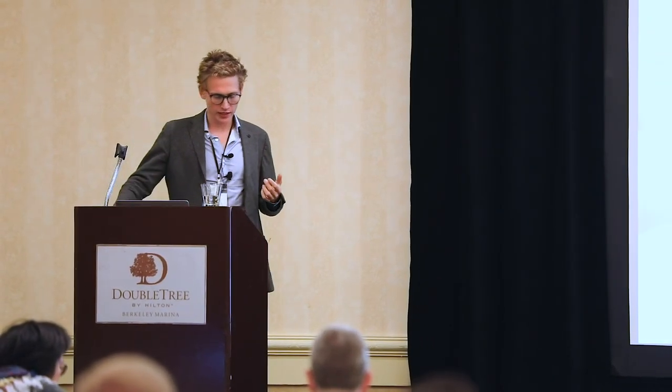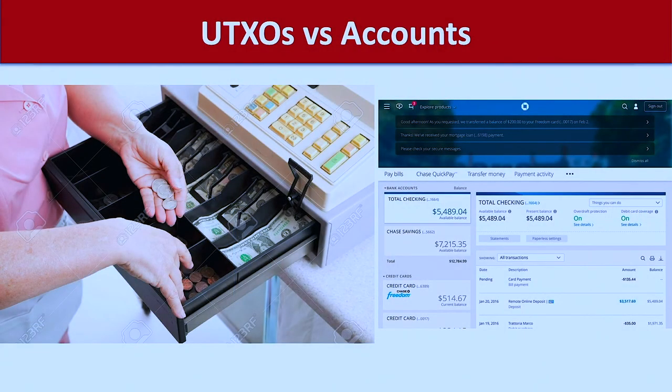A nice way to think about it is that Bitcoin is much more like cash, where I cannot spend half a $10 bill — I can only spend the full bill and get change back. Accounts are much more like a bank account, where I don't necessarily know which specific dollars I'm spending. Every bill has a history — the hands it exchanged — whereas a bank account balance is abstract.